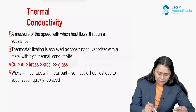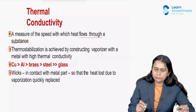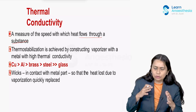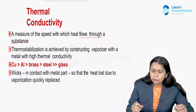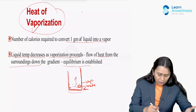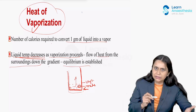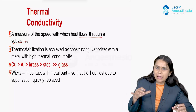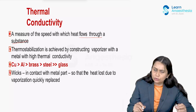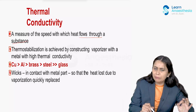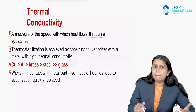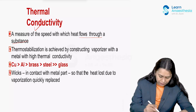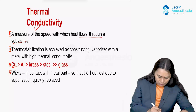Thermal conductivity is the measure of the speed with which heat flows through a substance. The metal with which the vaporizer is made should have high thermal conductivity to compensate for the temperature loss due to heat of vaporization. As the liquid cools, heat should flow from the metal to the liquid to compensate for this temperature loss. Metals with high thermal conductivity allow this compensation to happen faster. Copper has the highest thermal conductivity, followed by aluminium, brass, steel, and glass.